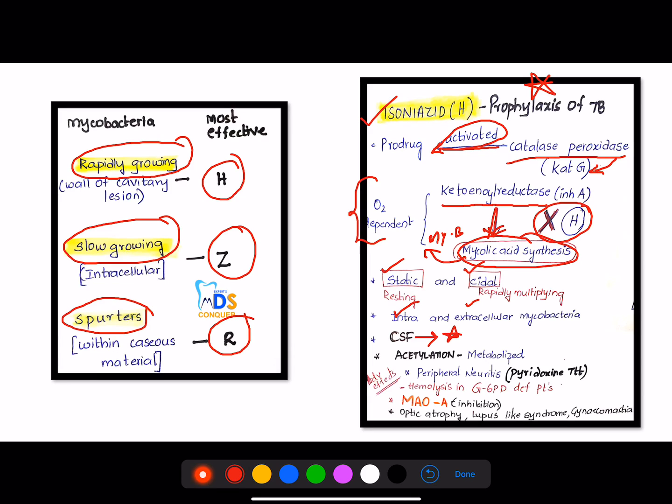And the metabolization is through acetylation. And these are the very important adverse effects like peripheral neuritis which is treated by pyridoxine, hemolysis in G6PD deficiency patients, MAO inhibition, optic atrophy, lupus-like syndrome, and gynecomastia.